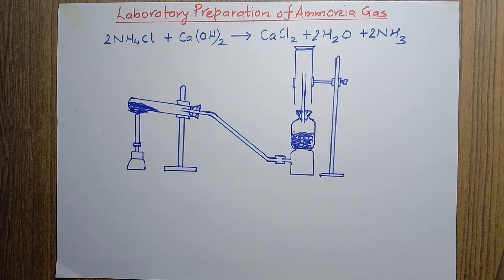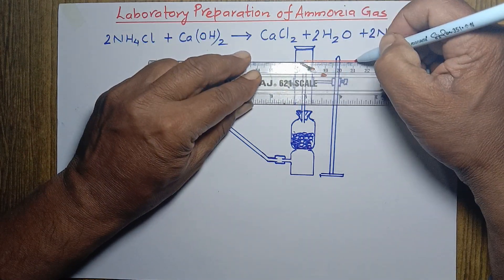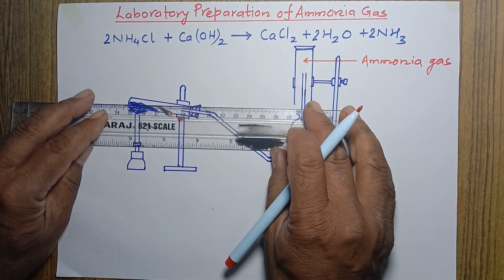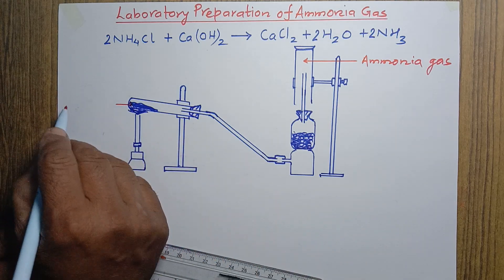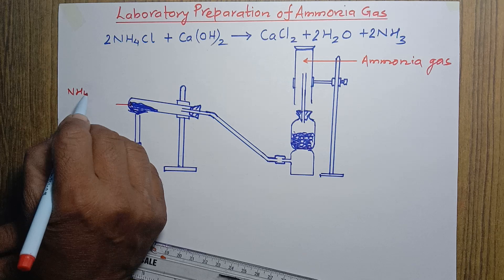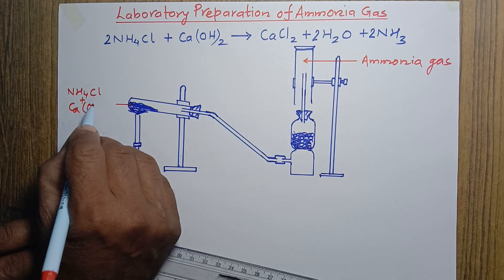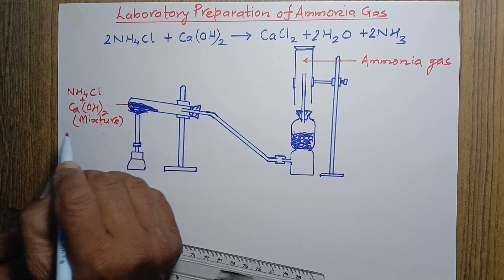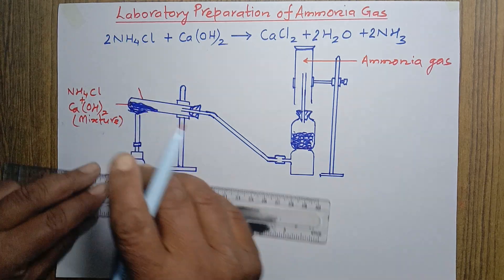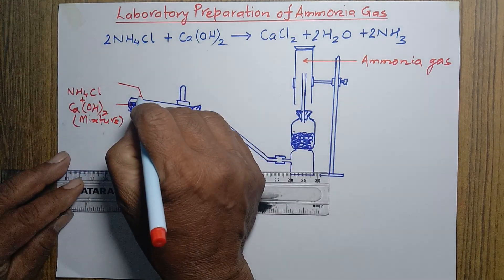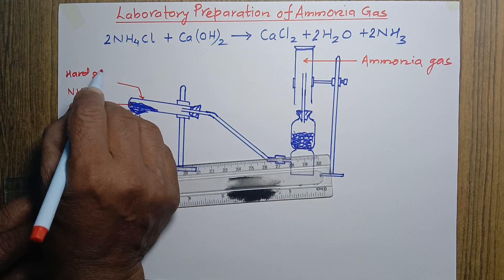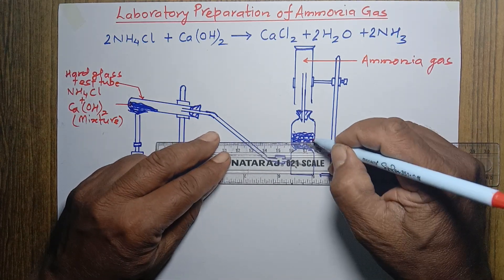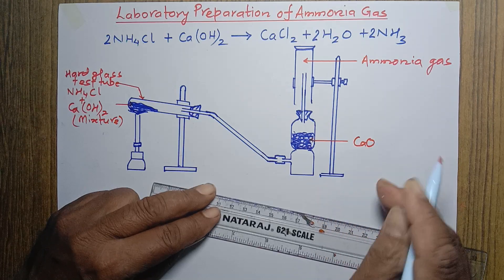The gas produced in this process is ammonia gas, so this is labeled 'ammonia gas.' The mixture in the test tube is ammonium chloride and calcium hydroxide — this mixture is heated here. This is labeled as hard glass test tube. This is lime, with chemical formula calcium oxide (CaO), and this is labeled lime tower.